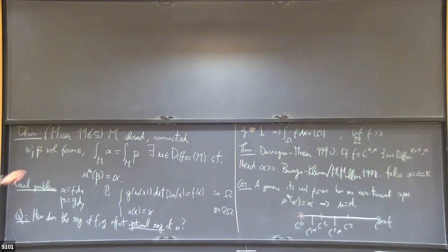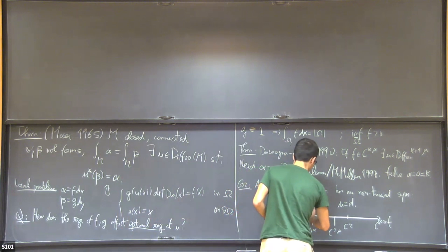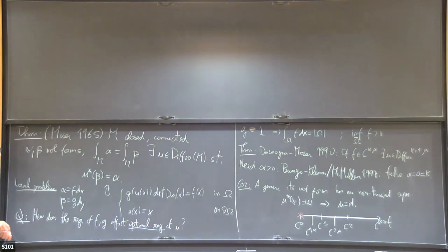The way Moser proved this is by the now celebrated Moser flow method, which is exactly the issue built. I think the confusion comes because you have different alphas. Let's call it omega. My apologies. Let's call it omega. What Dacorogna and Moser tell us is that there is a beautiful optimal regularity theory.